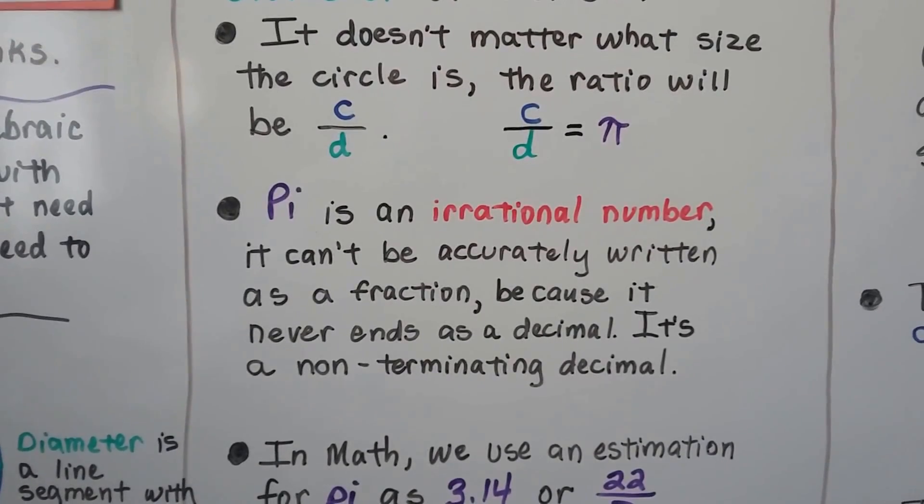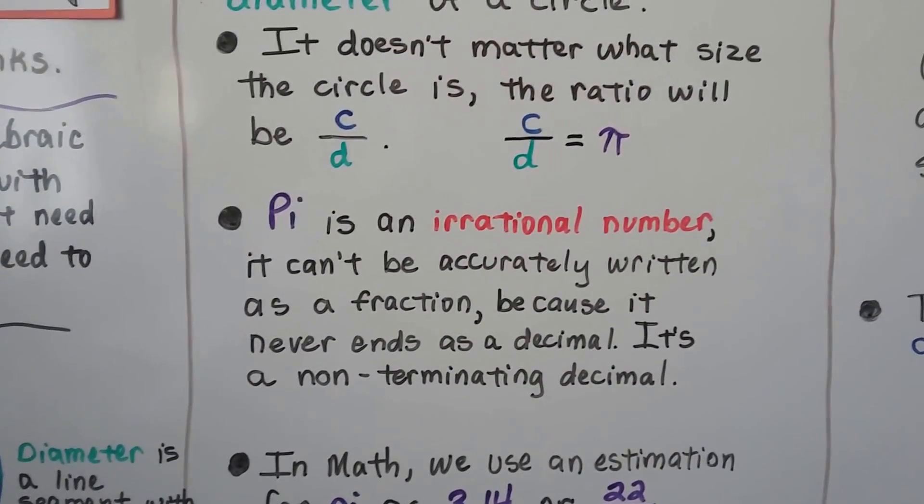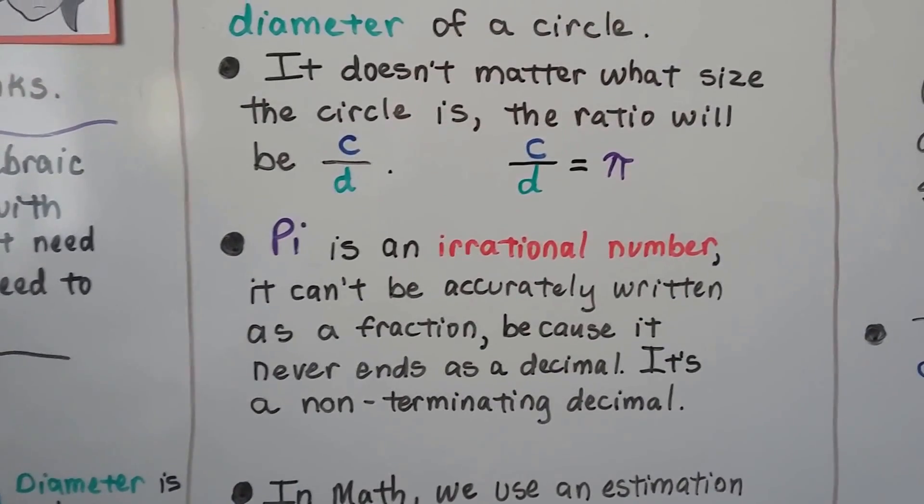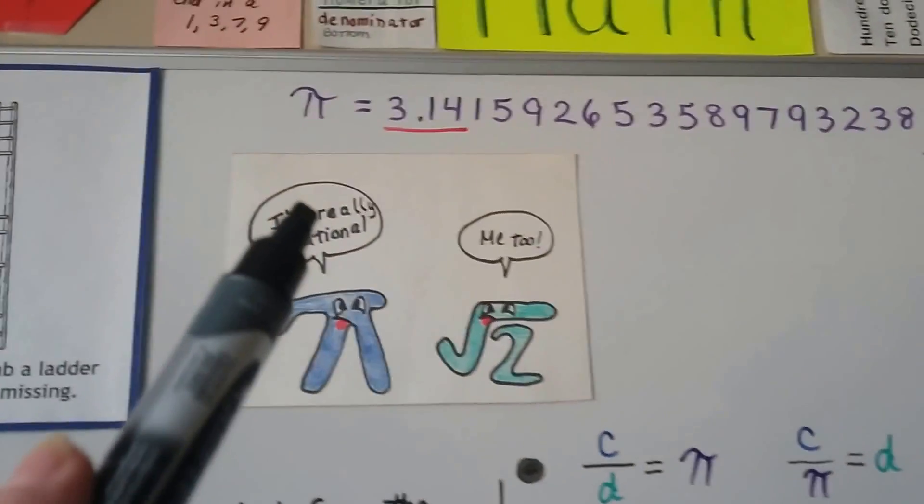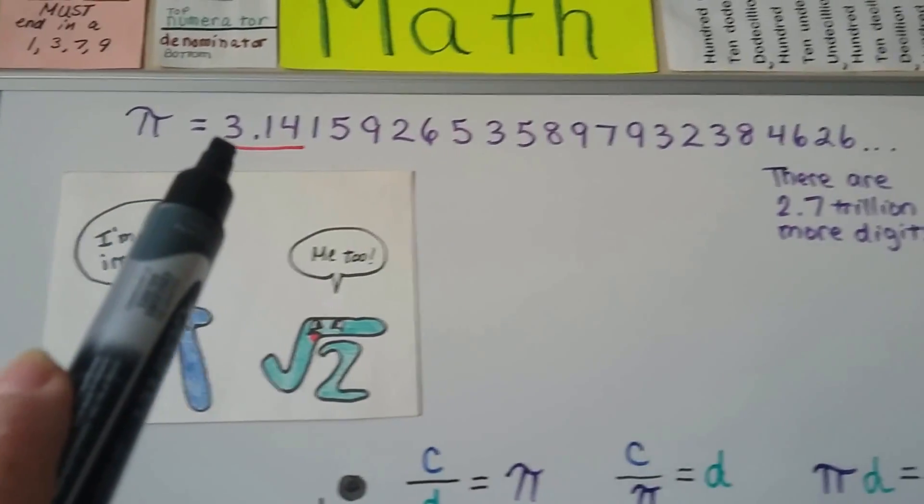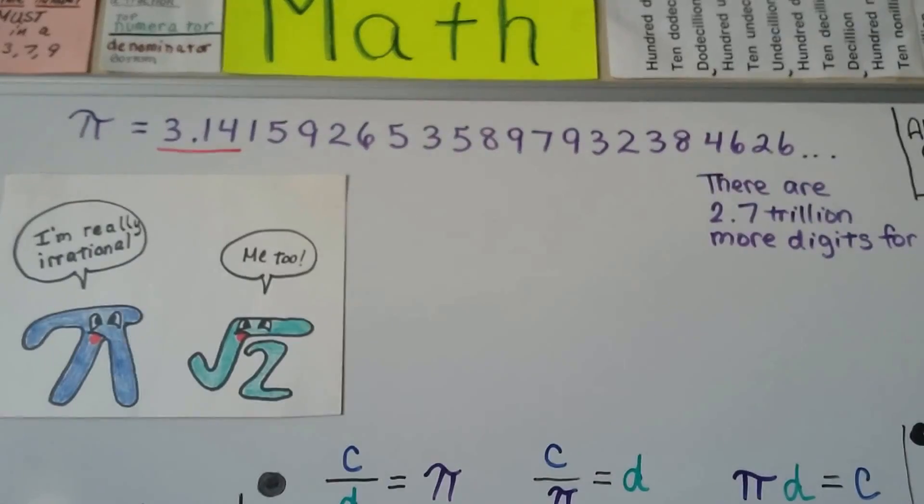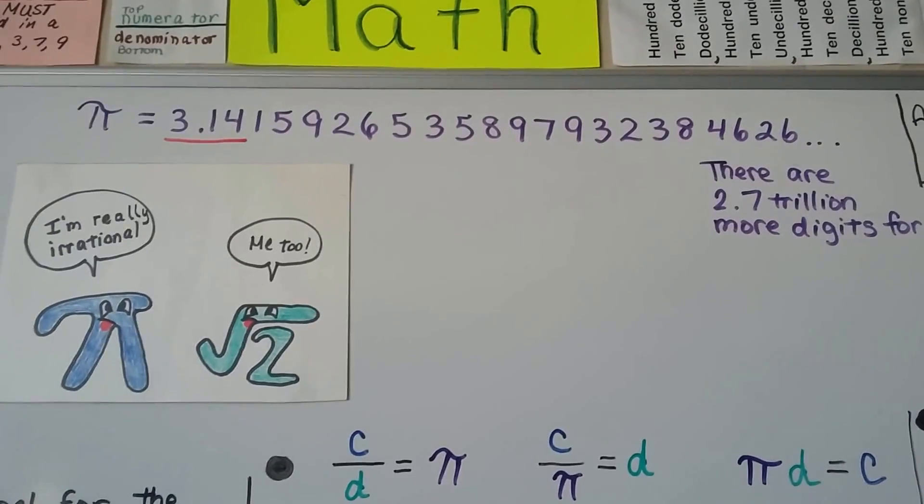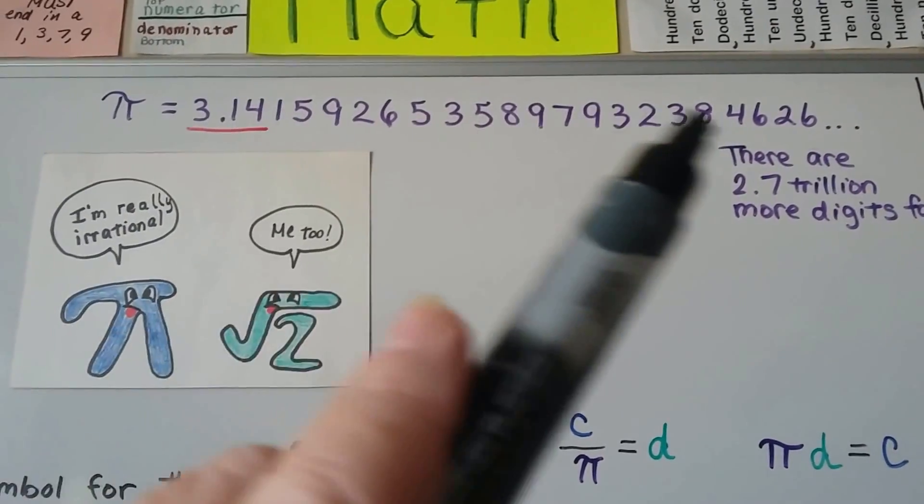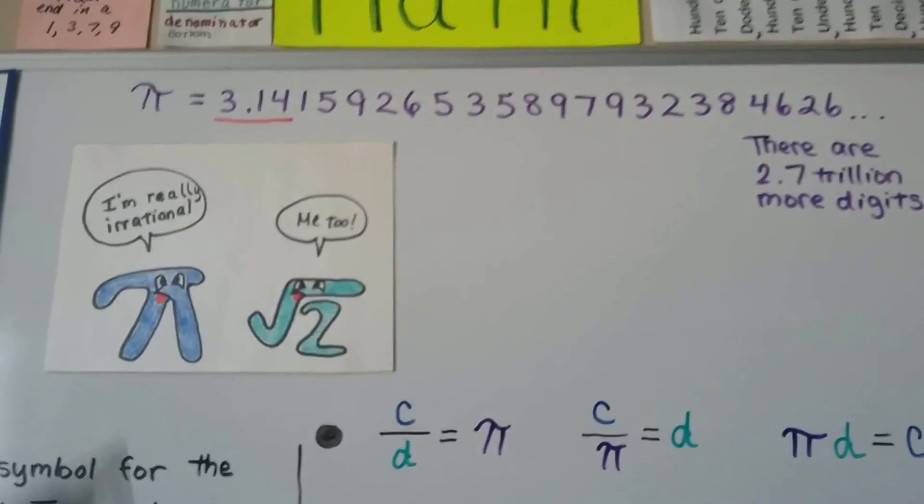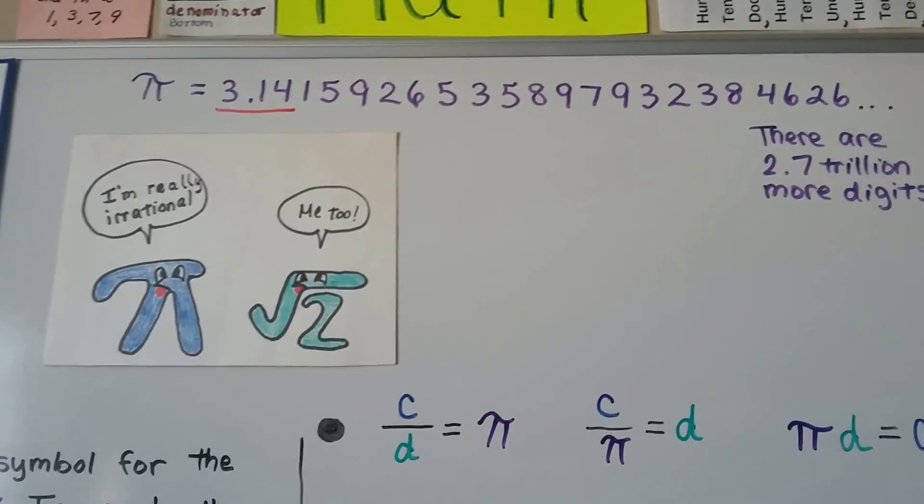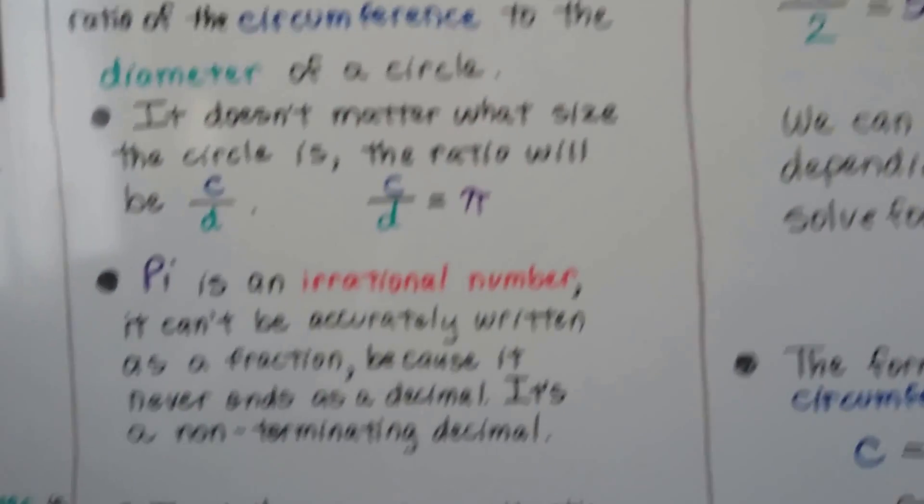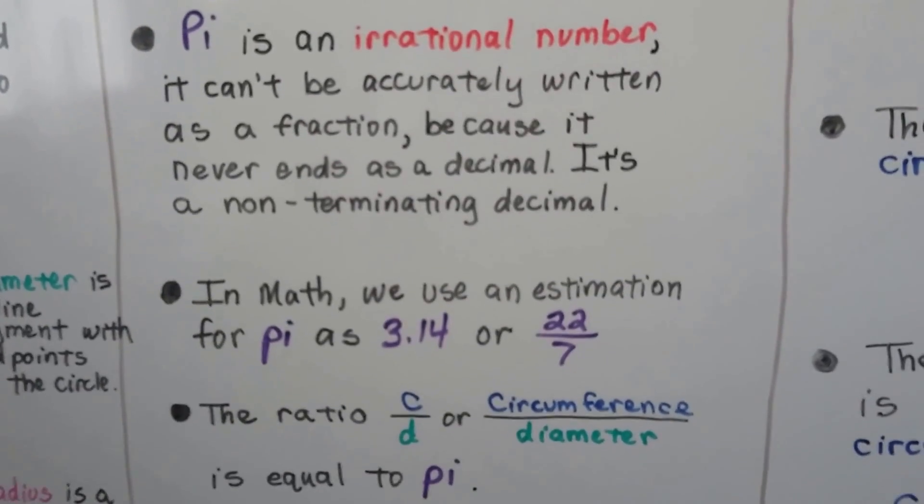And pi is an irrational number. It can't be accurately written as a fraction, because it never ends as a decimal. It's considered a non-terminating decimal. Take a look at this. Here's pi, and I wrote some of the digits, but there's 2.7 trillion more digits for pi. That's really irrational. We can't write that as a fraction. There's no way. So we use the first three digits, 3.14. Square root of 2 is irrational also. Rational numbers can be written as fractions, but irrational ones can't.